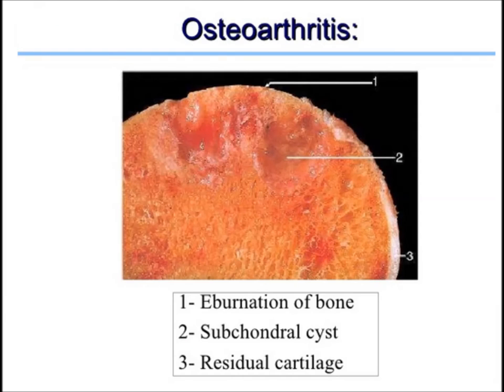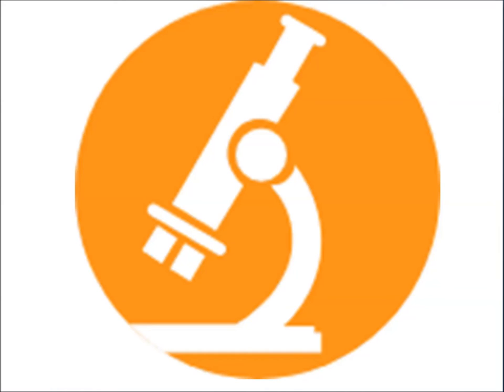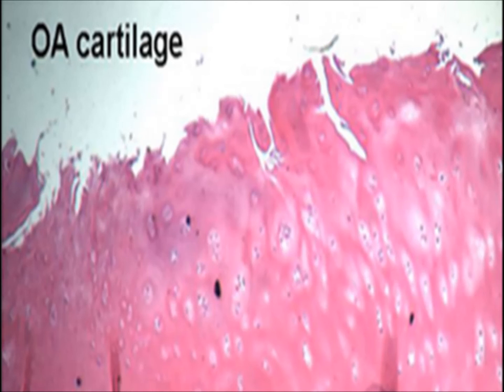There is eburnation of bone, subchondral cyst, and some residual cartilage. On microscopy of the articular cartilage, there are cracks or fibrillation of the cartilage.